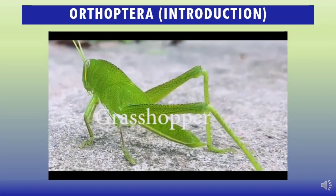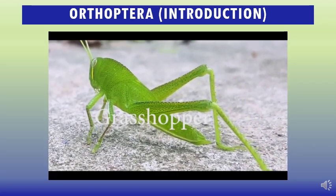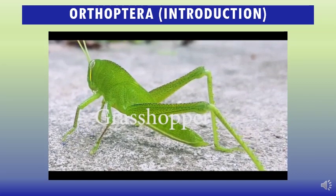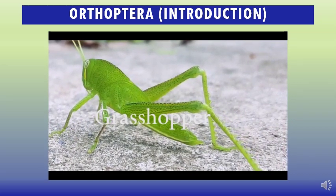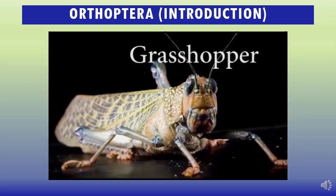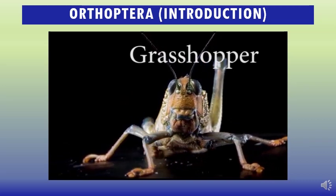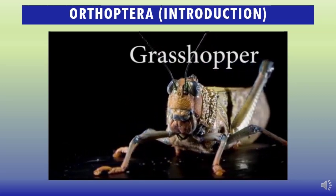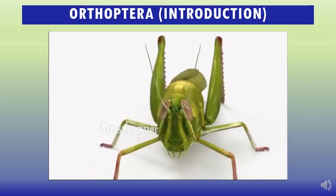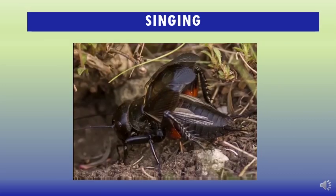Members of the order Orthoptera are found at nearly all latitudes, though they are primarily tropical insects, as judged by species diversity which is greatest in warm areas. Most are known for their well-developed hind legs and jumping abilities. Many Orthoptera are noteworthy because they sing, particularly at night.